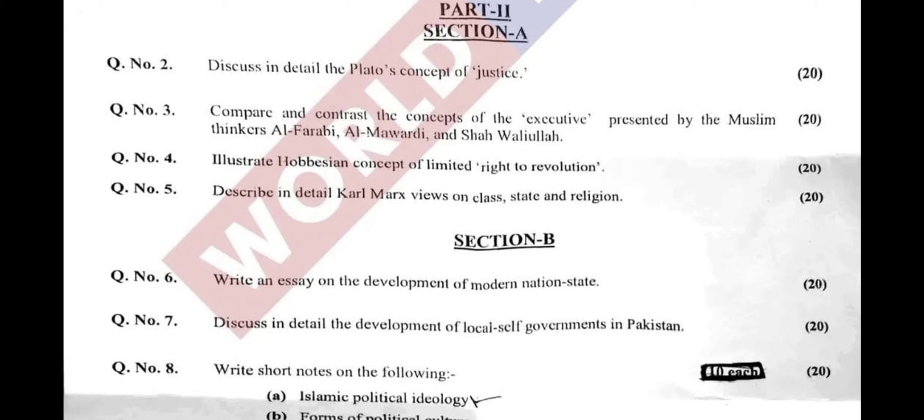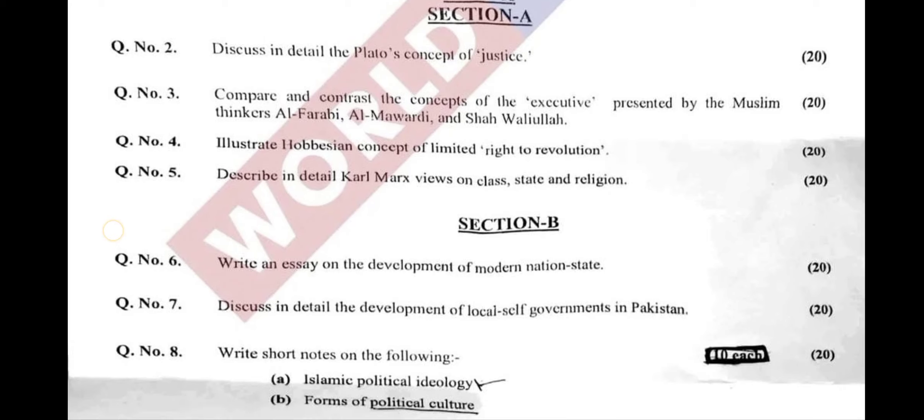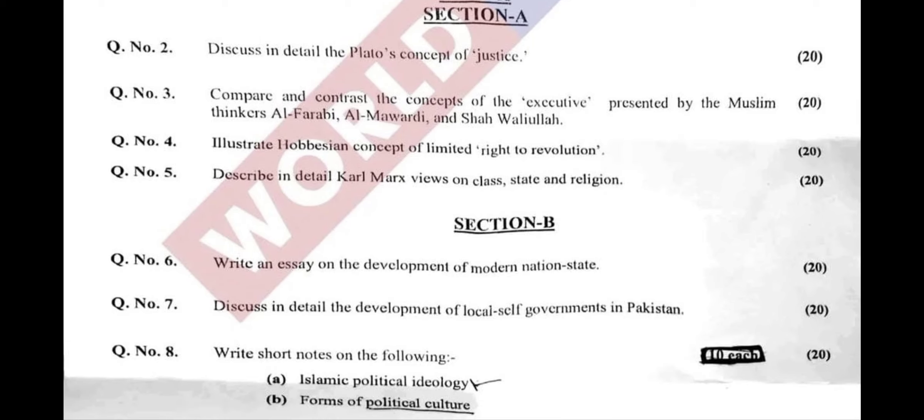Question No. 4 is: illustrate the Hobbesian concept of limited right to revolution. The next question is: describe in detail Karl Marx's views on class, state, and religion.